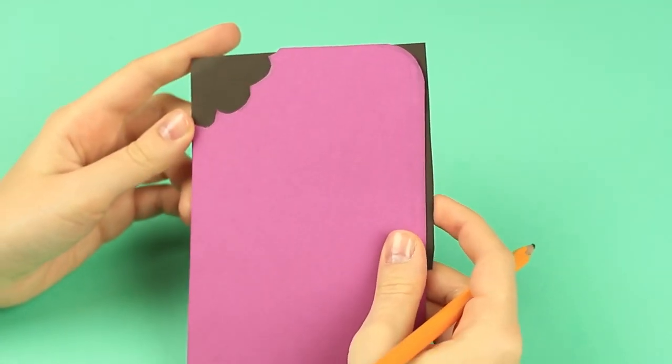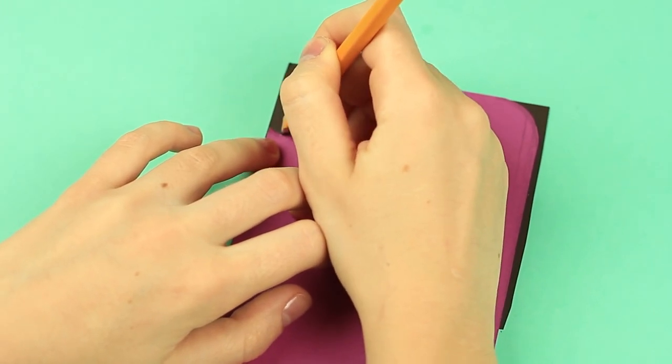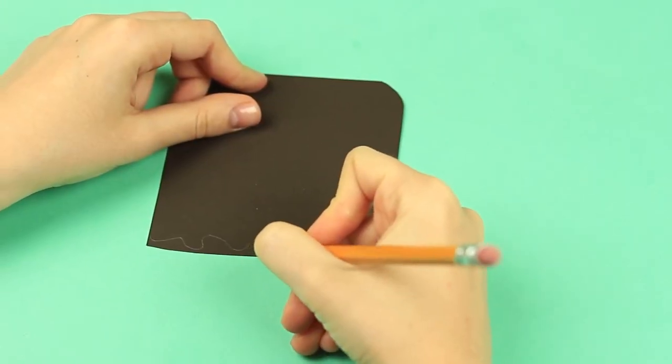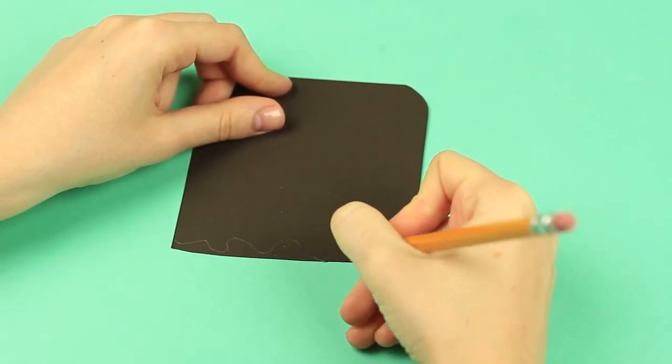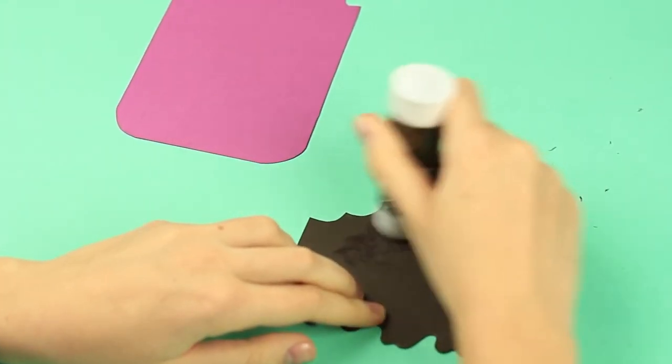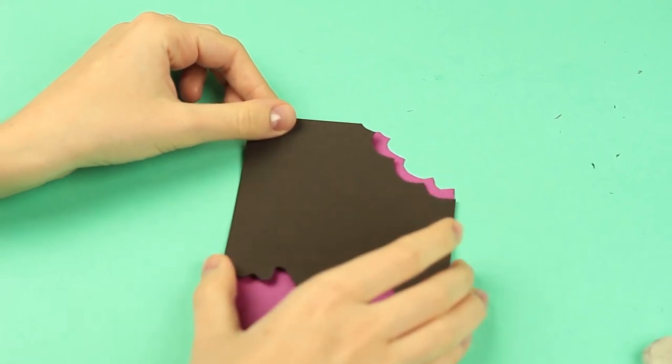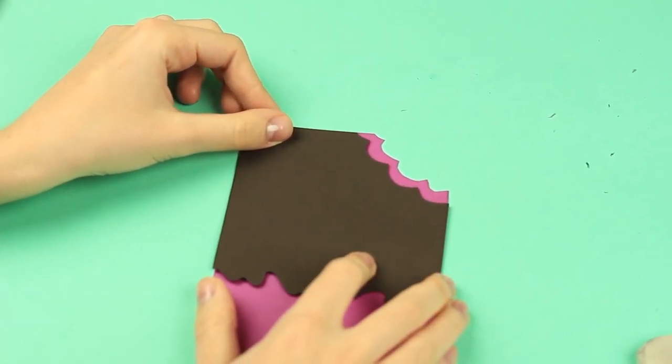Cut off the excess. Take brown cardboard for a chocolate glaze. Trace the ice cream outline and draw the melting glaze. Cut it out, add glue, and attach the details. The bitten chocolate can be smaller than the ice cream.